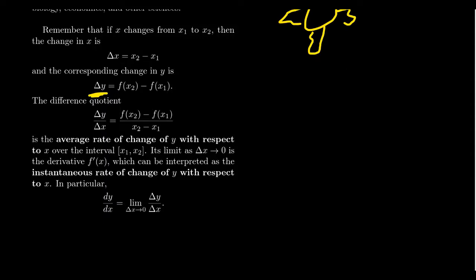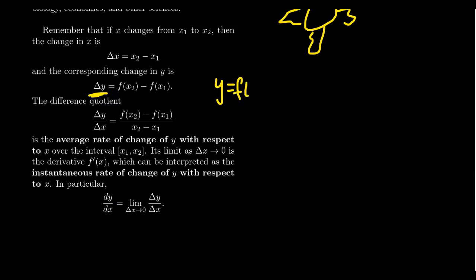And since Y is given by this function relationship, Y equals F of X, then the Y coordinate attached to X1 would be F of X1, and the Y coordinate attached to X2 would be F of X2. So delta X represents a change of the horizontal, what we often refer to as the run, and delta Y represents a change of the Y coordinate we often refer to as the rise.